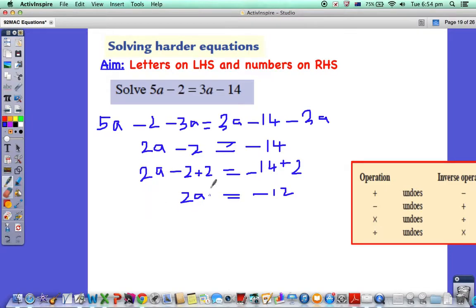What's the opposite? Multiply by 2 means divide by 2. So we divide by 2 on both sides because whatever we do to the left-hand side, we have to do to the right-hand side. 2 divided by 2 is 1, so a equals negative 12 divided by 2, which is negative 6.